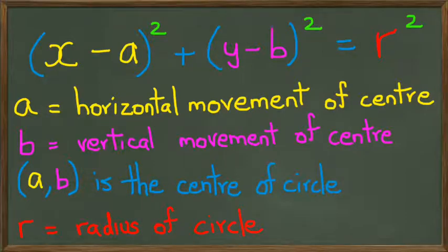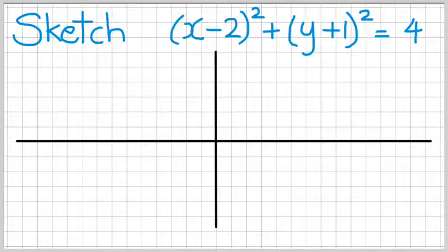And your r is of course the radius of the circle. So if you have your equation in this format, it's pretty easy to draw a circle. So let's try that next.